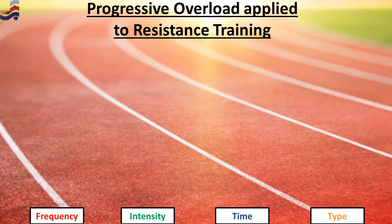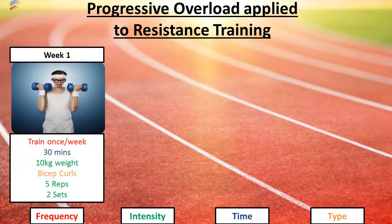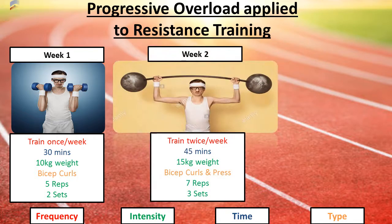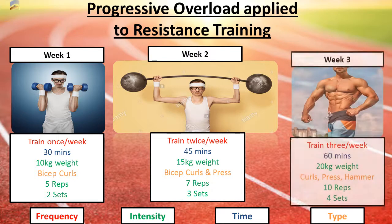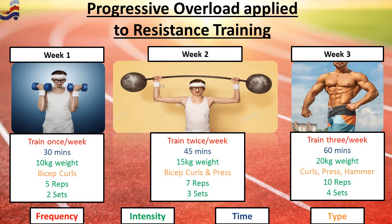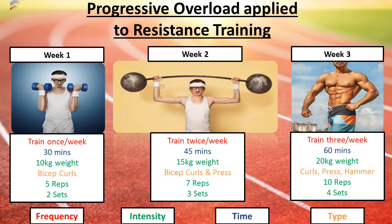Applying progressive overload to a resistance program: in week one, the athlete trains once a week, 30 minutes in the gym, 10-kilogram weights, focusing on bicep curls with 5 repetitions and 2 sets. The following week, training twice a week, extending the time, extending the weight, and varying the exercise type. By week three, training three times a week, 60 minutes each time, 20-kilo weights, varying exercises again with increased reps and sets. You can see how frequency, intensity, time, and type all increase progressively.